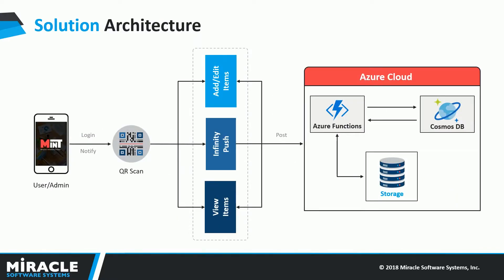Mint relies exclusively on QR codes — every QR code represents a single item in our digital inventory. Our application backend sits on Azure Functions, which is serverless. Azure Functions make use of Azure Blob Storage for persisting pictures and Cosmos DB for storing items in a NoSQL database. Orchestration across Blob Storage and Cosmos DB is handled by the Azure Function itself. This is how Mint succeeds in making our lives very easy.